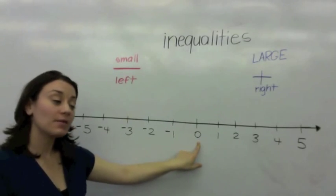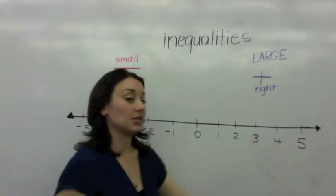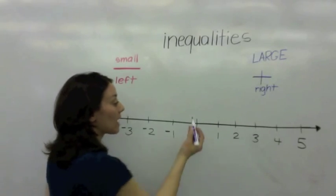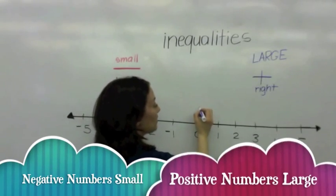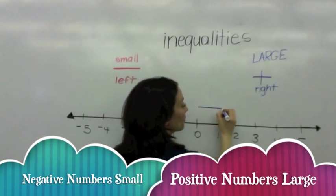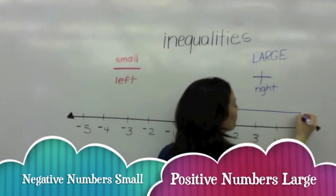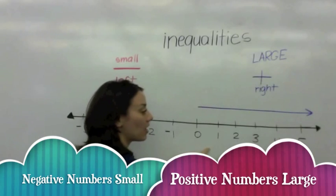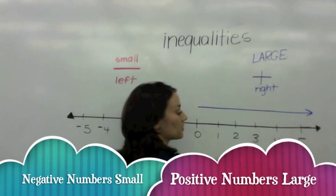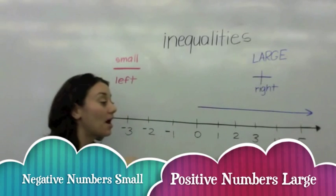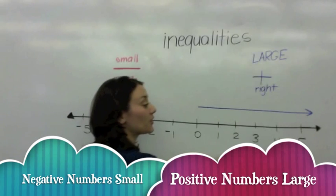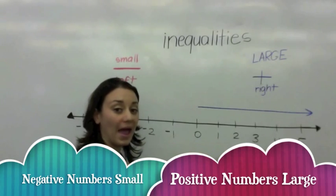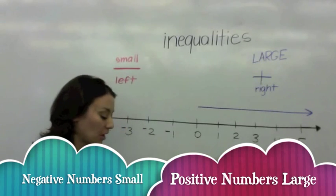What comes after 0? Well, on the right side of a number line, you have positive numbers. Positive numbers get bigger as they move away from 0.